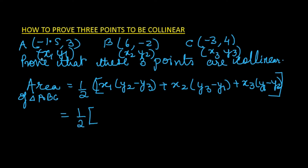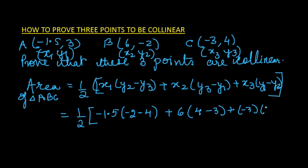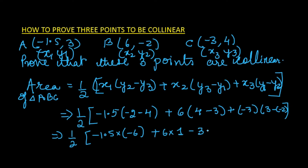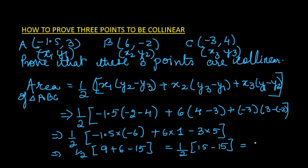Let us substitute the values. x1, y1 is A = (-1.5, 3), x2, y2 is B = (6, -2), and x3, y3 is C = (-3, 4). Substituting: half × [(-1.5)(-2 - 4) + 6(4 - 3) + (-3)(3 - (-2))] = half × [(-1.5)(-6) + 6(1) + (-3)(5)] = half × [9 + 6 - 15] = 0. So the area of triangle ABC equals 0.